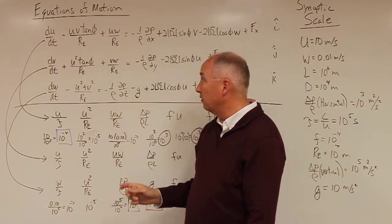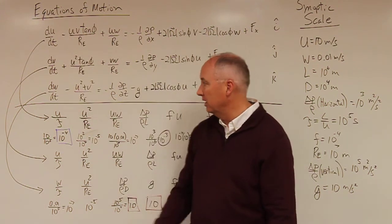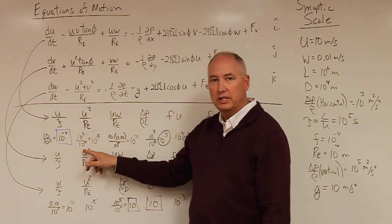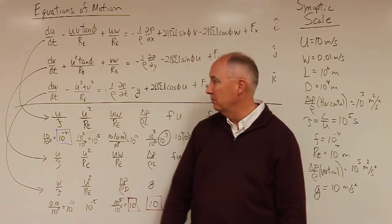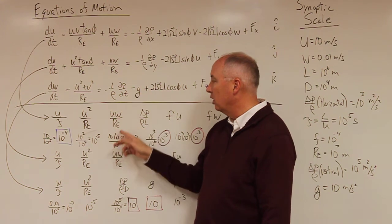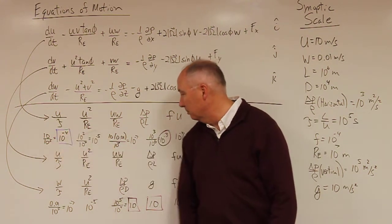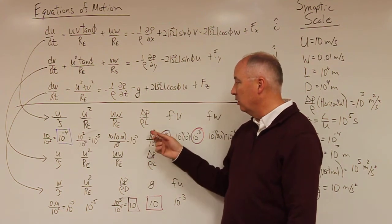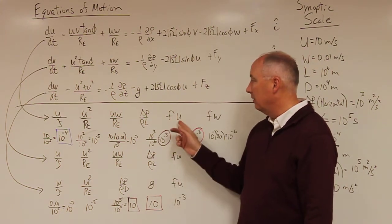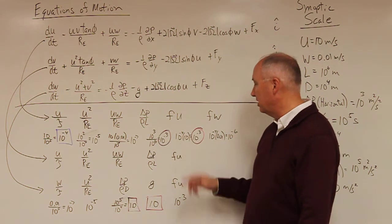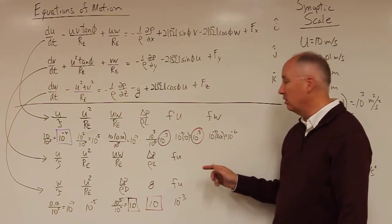The second term, uv·tan(φ)/R_E, scales as u² over the radius of the Earth — treating u and v as equivalent and ignoring the tangent — giving 10² over 10 to the 7th, which is 10 to the minus 5th. Already this term is an order of magnitude smaller than the first. The third term, uw/R_E, comes out to 10 to the minus 7th — two orders smaller than the second and three smaller than the first. The pressure gradient term, delta-p over rho divided by the length scale, is 10 to the 3rd over 10 to the 6th, giving 10 to the minus 3rd — a large term. The Coriolis term f·u is 10 to the minus 4th times 10, also 10 to the minus 3rd. The other Coriolis component f·w is 10 to the minus 4th times 0.01, giving 10 to the minus 6th.